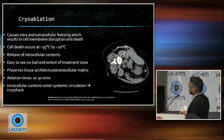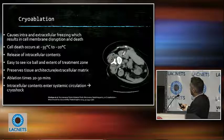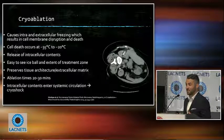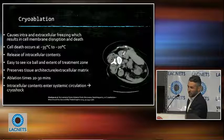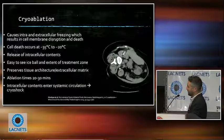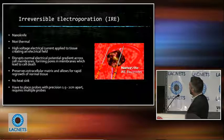Cryoablation uses freezing temperatures to cause cell death. The nice thing about cryo is that you can see the ice ball formation and really keep track of your ablation zone — this is actually a probe in the kidney here. With microwave and RFA, you can't keep track of the ablation zone as well; it's harder to see with CT, so you have to use your tables and experience. The problem with cryo is that it takes much longer — 20 to 30 minutes — uses a larger probe, and in the liver there are issues with bleeding we worry about. There's also something called cryoshock, which is rare, but we try to avoid it.